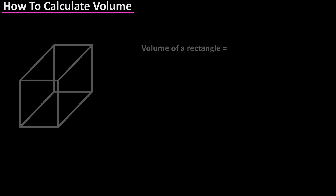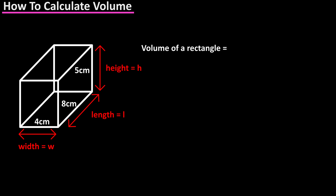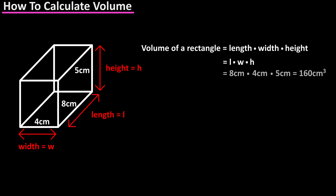The formula for calculating the volume of a rectangle is basically the same as for a cube shape — length times width times height — but we can't use the cube shortcut because not all of the measurements of the rectangle are the same. So in this example we have L times W times H: 8 centimeters times 4 centimeters times 5 centimeters, which is 160 centimeters cubed.